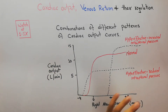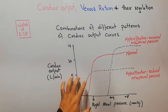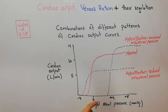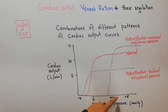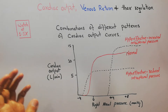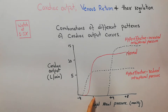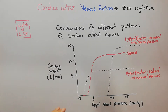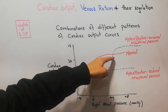Here we have the cardiac output on the Y-axis and the right atrial pressure on the X-axis. The normal cardiac output curve shows five liters per minute at zero millimeter of mercury right atrial pressure. When right atrial pressure starts increasing, the cardiac output increases above the normal level, until a point where there is no further increase and it makes a plateau.